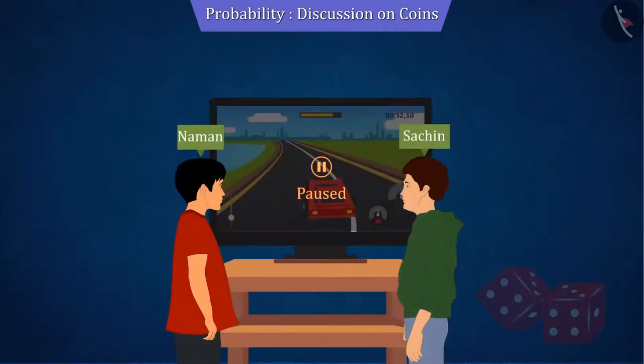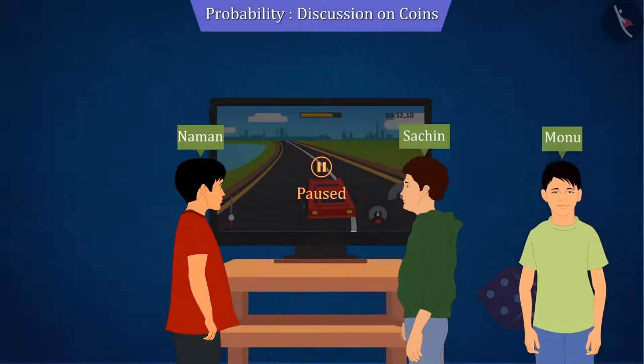As we saw in our previous video, Monu wanted to start playing video games after getting the probability of two coins. But Naman was not happy with this and asked to consider tossing three coins. Let us see what happened.